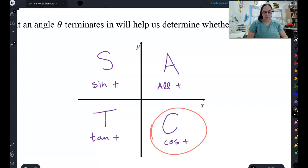And the last quadrant, quadrant four, we get that cosine is positive. That should make sense because cosine is the x value. In this quadrant, the x's are positive. The y's are what's negative.